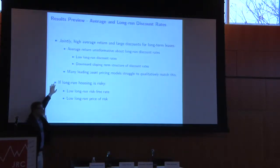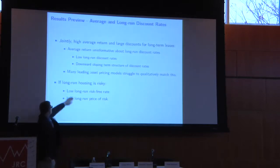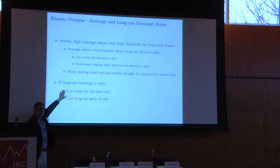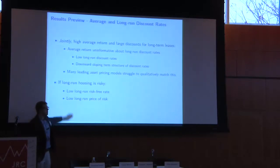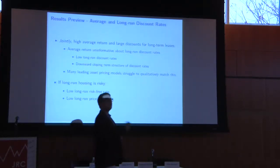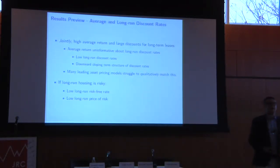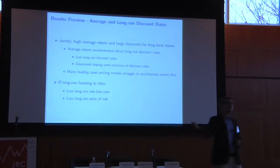Beyond that, if long-run housing is a risky asset — and we'll show evidence suggesting it is — it tells us two things. Long-run risk-free rates have to be very low, and also the price of risk in the very long run is relatively low, even if the quantity of risk is high. This is in direct contrast to what asset pricing models tell us in order to rationalize the equity premium.